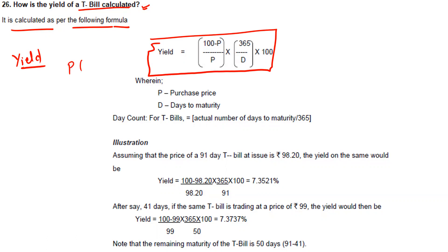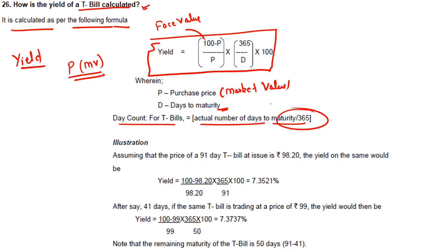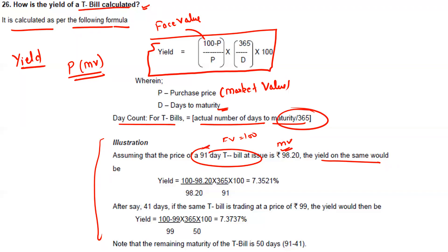The yield of a treasury bill is calculated as specified on the RBI website. The formula is: yield equals (100 minus P) divided by P, multiplied by 365 divided by d, multiplied by 100 — where P is purchase price or market value, and d is the number of days to maturity.